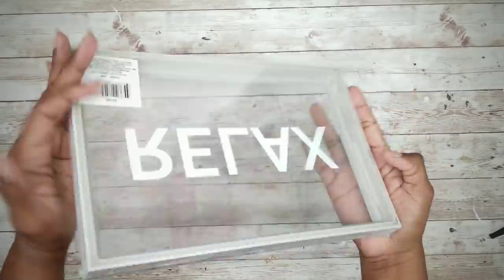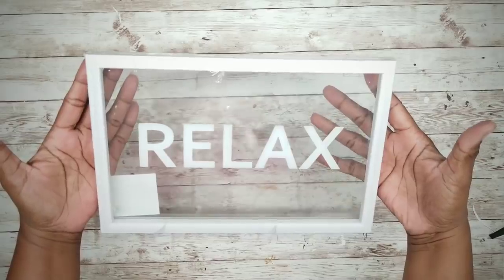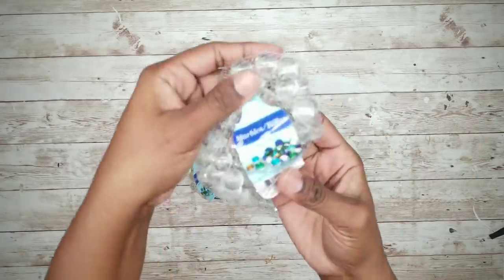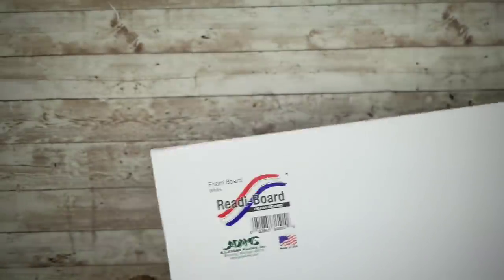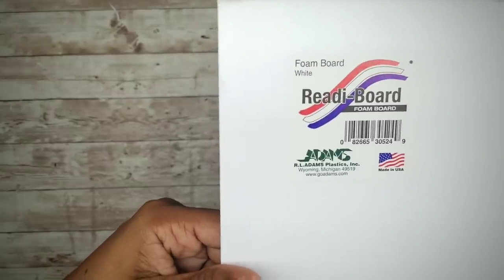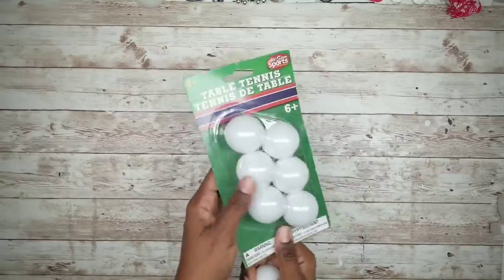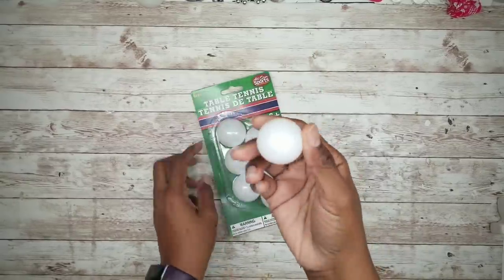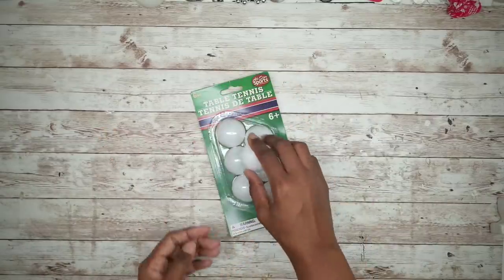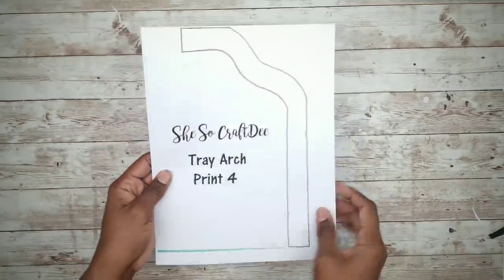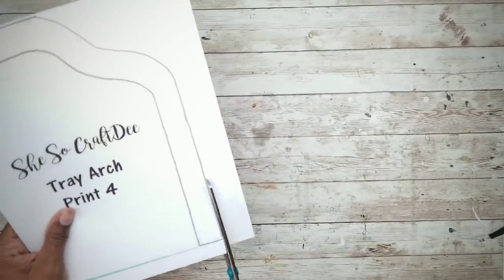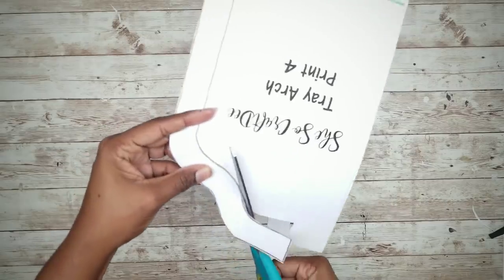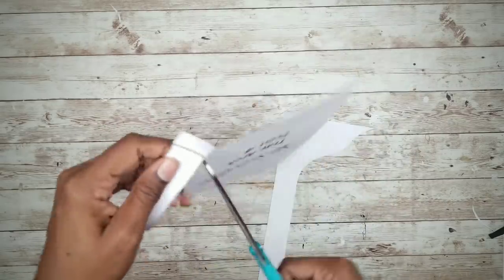For this project we'll need one of these glass signs from the Dollar Tree, two bags of glass marbles from the Dollar Tree in any color, a piece of foam board from the Dollar Tree and one ping pong ball from the Dollar Tree as well. To make the arches we'll use this template that I have created and it is linked in the description box below. Go ahead and print out that template and then cut it out.